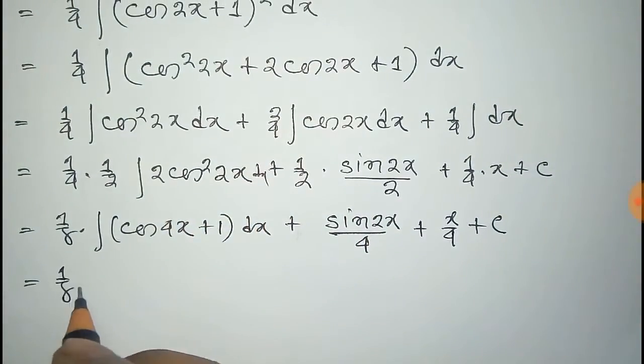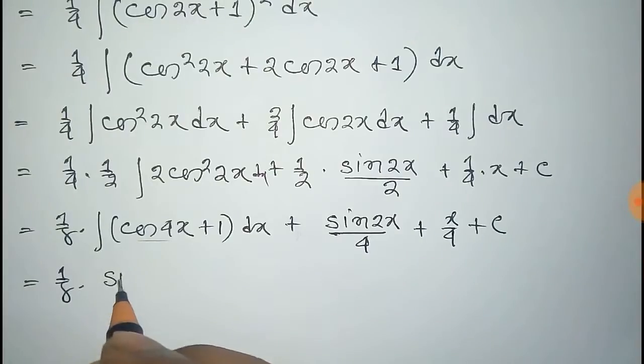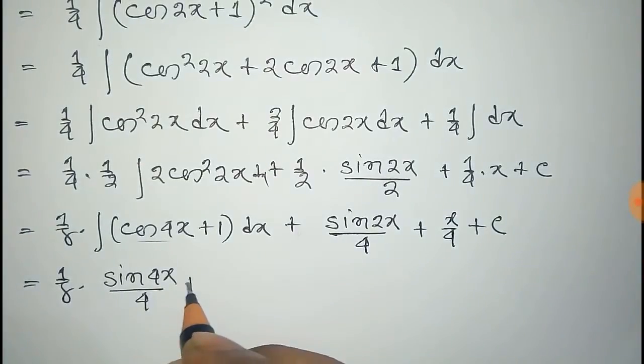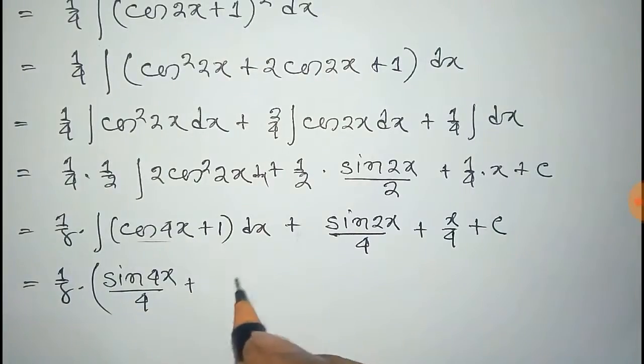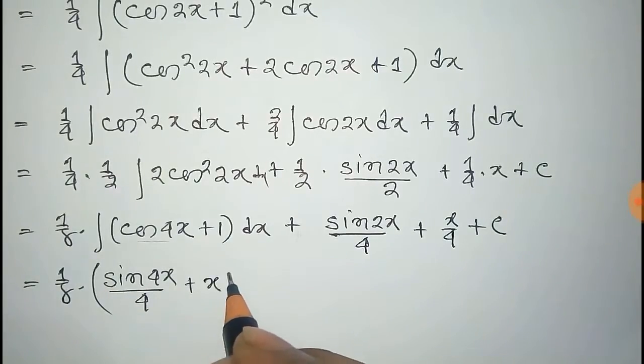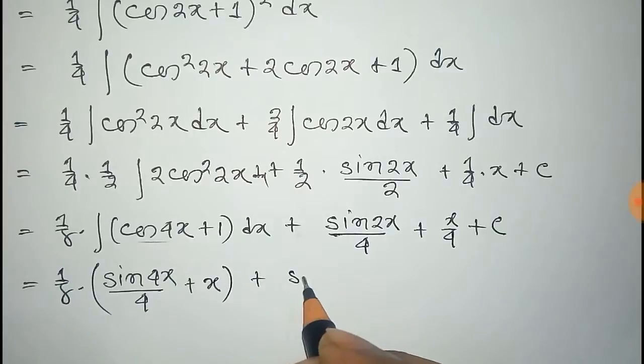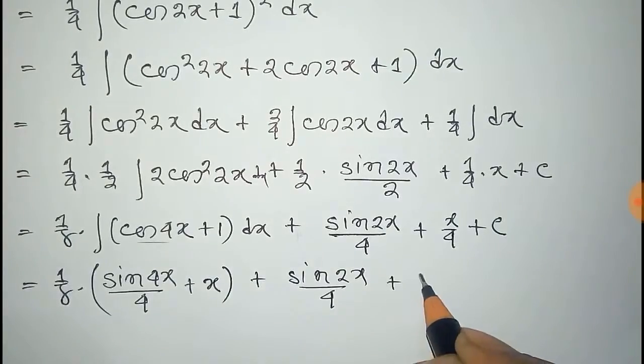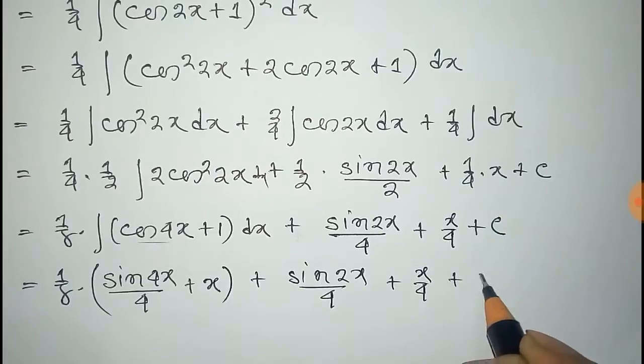This is equal to 1 by 8. The integration of cos 4x is sin 4x by 4. The integration of 1 is x plus sin 2x by 4 plus x by 4 plus c.